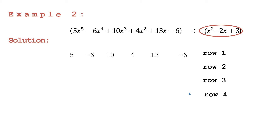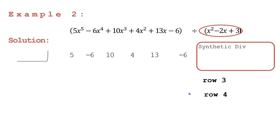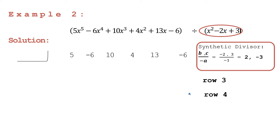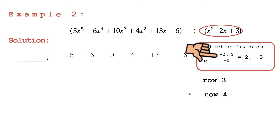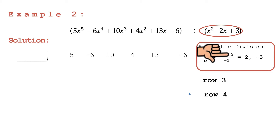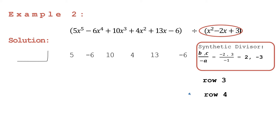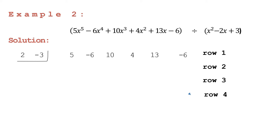To get the numerical coefficients of our divisor, we follow the formula b divided by negative a and c divided by negative a. The value of a is 1, the value of b is negative 2, and the value of c is positive 3. Simplifying: negative 2 divided by negative 1 is equal to positive 2, and positive 3 divided by negative 1 is equal to negative 3. Let's write our synthetic divisors: positive 2 and negative 3.